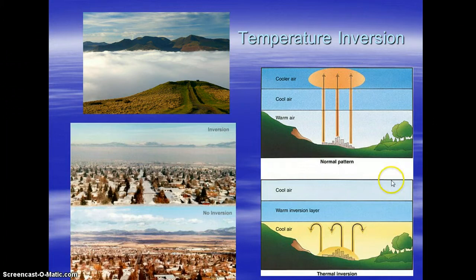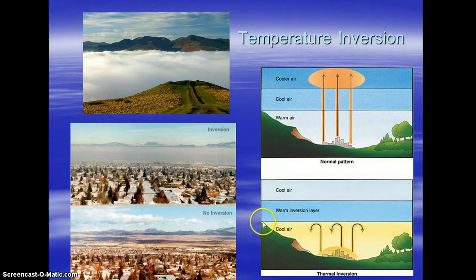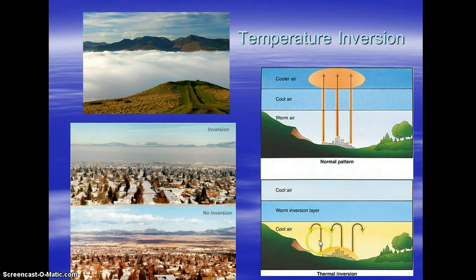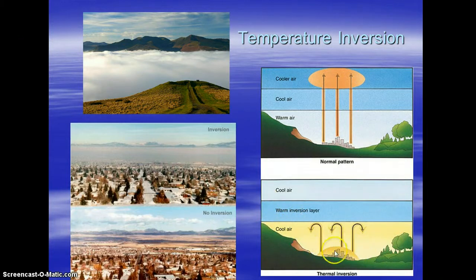Down here draw another box and label it temperature inversion — this is also called thermal inversion, same thing. Put our three layers of the atmosphere in it. With a temperature inversion, this typically happens in valleys, so on your drawing you can draw mountains going up and over, because this is very typical of a valley situation with this thermal temperature inversion.